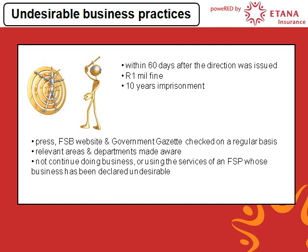If the Registrar is convinced that these requirements are met, the following must happen. 1. The Registrar must publish an intention to make the declaration in the Gazette, provide reasons and invite written representations to the Registrar. 2. The declaration then gets published and the FSP concerned must stop with the business practice on or after the date of publication in the Gazette. This refers to the actual declaration, not the intention to declare. 3. If the FSP carries on with the business practice after the date of the publication, the Registrar may inform the FSP to rectify or reinstate to the satisfaction of the Registrar any loss or damage which was caused by or arose out of the carrying on of the business practice concerned.